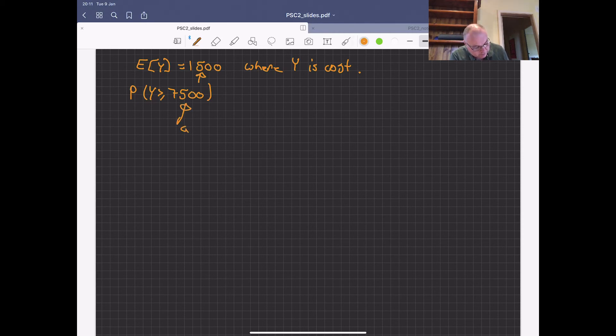So we know that that is going to be less than or equal to the expected value, 1,500 divided by a, which is 7,500, which is 0.2. So even though we don't know the distribution, we know the probability that the cost is greater than 7,500 is going to be less than 0.2. I don't know the exact value. I just know it's going to be basically 20% or less.